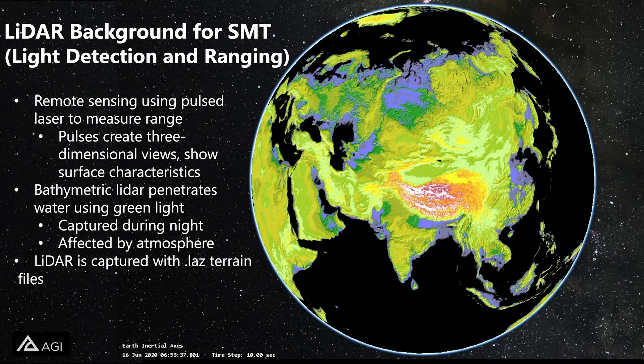Bathymetric LiDAR in particular is able to penetrate through water using a specialized green wavelength. A drawback of using bathymetric LiDAR is that it's mainly captured during night and it can be skewed and affected by the atmosphere such as clouds and air traffic. Another drawback is that LiDAR is captured with a large terrain file, which can often be difficult to use for post-processing.